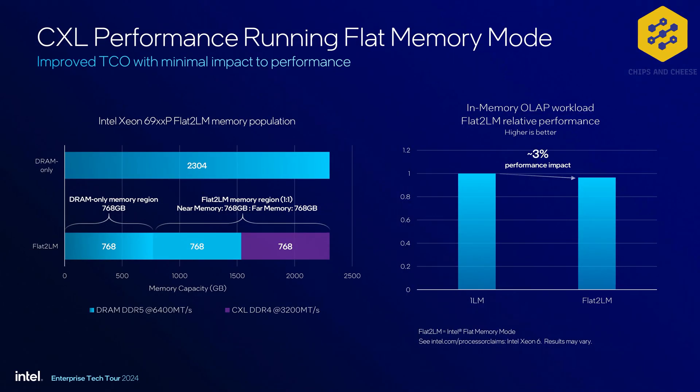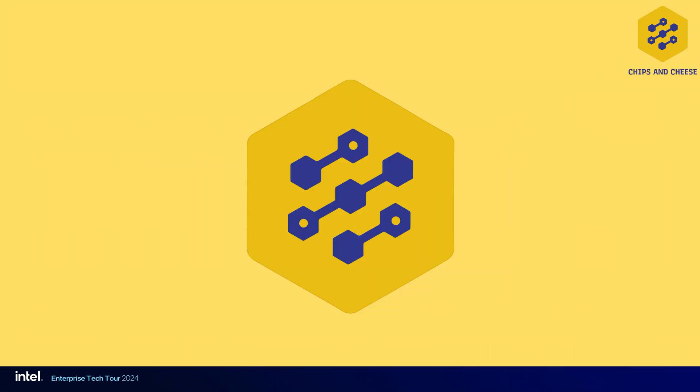For those type three devices, Intel is supporting a flat memory mode — and if you remember Optane, this is how Intel managed to get standard DRAM and Optane to work together in the same system. That technology is now being essentially used for CXL, and will be supported in all GNR systems.